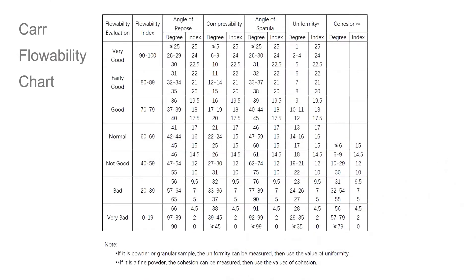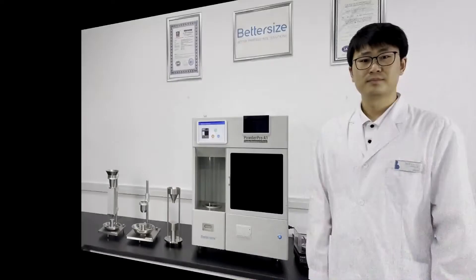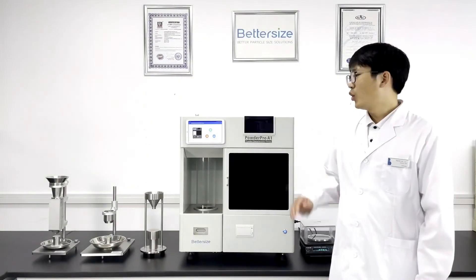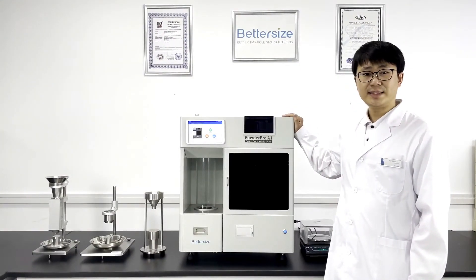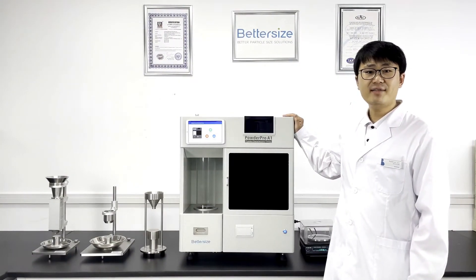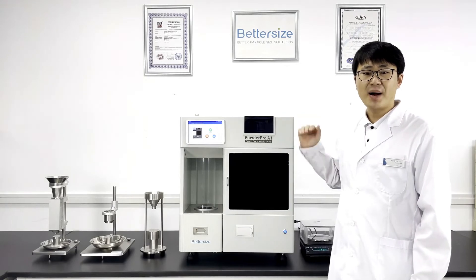The flowability is calculated based on the Carl flowability chart. As you can see from the chart, you should convert each test value to the corresponding index one by one. But with the powder for A1, it is easy to get the flowability index of bulk solids.